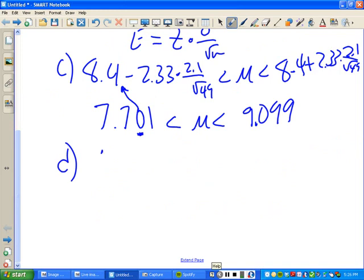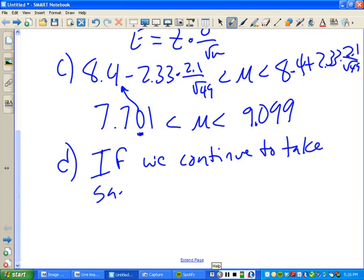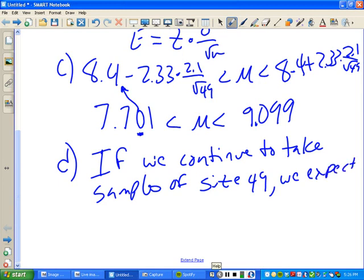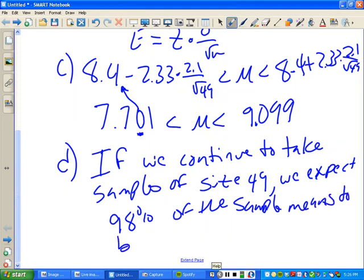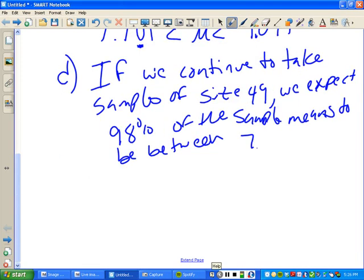If we continue to take samples of size 49, we expect 98% of the sample means to be between 7.701 and 9.099.